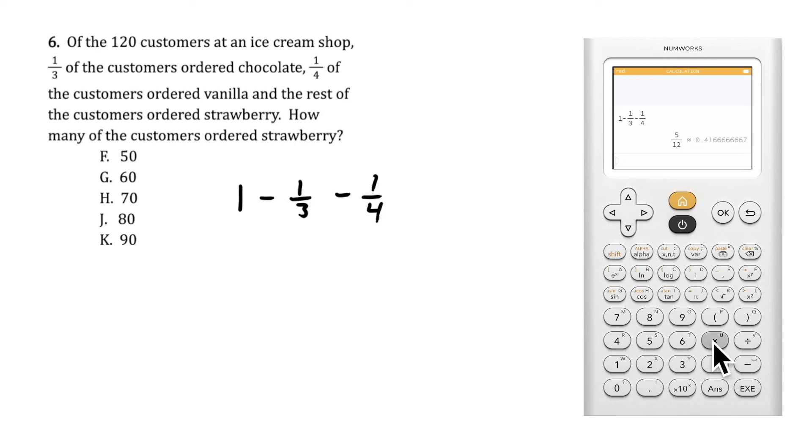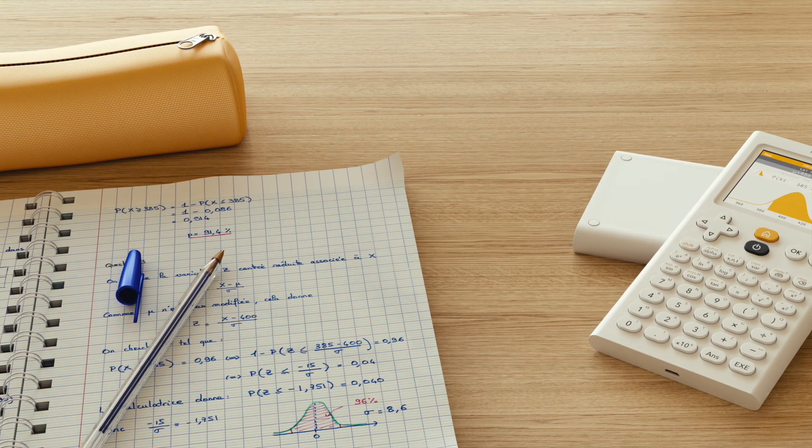We can multiply five-twelfths by the total number of customers, 120, to determine the number of customers who ordered strawberry to be 50. For more ACT practice, visit the NumWorks YouTube channel.